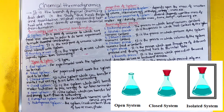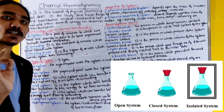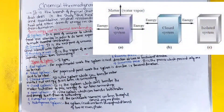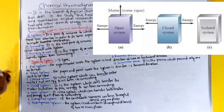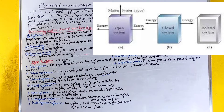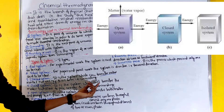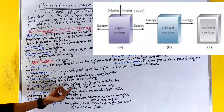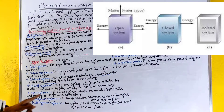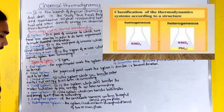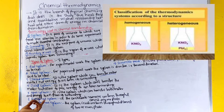An isolated system is a system that can transfer neither matter nor energy to and from its surrounding. An open system can transfer both matter and energy from its surrounding. We also have another open system that is a homogeneous system.